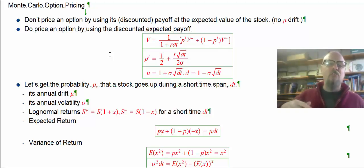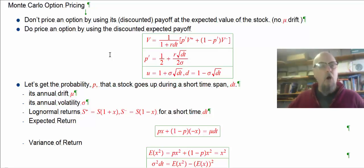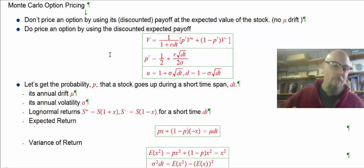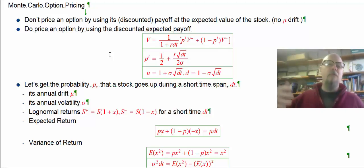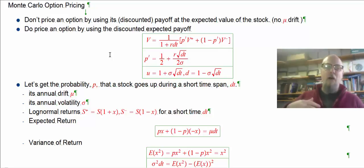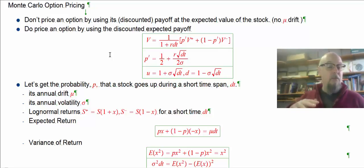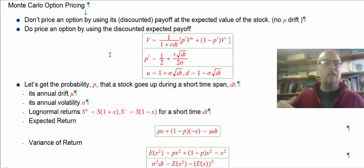So we can't just use the expected value of the stock price, then figure out the value of the option at that expected value, then discount it back to now for time value of money — because of course the payoff happens at expiry. We get that payoff later.